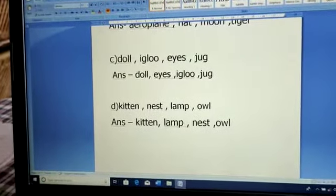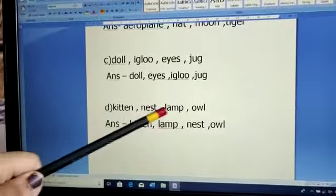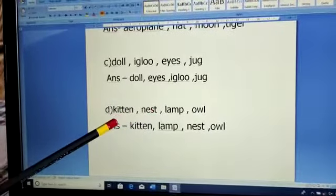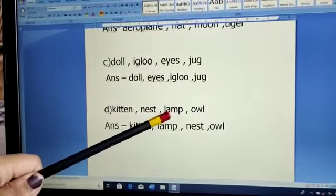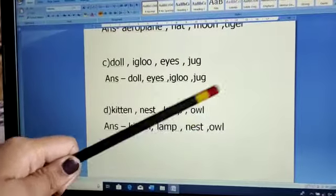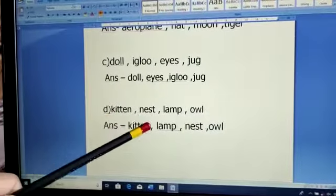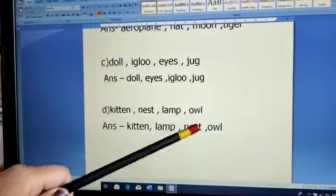Now last, D part was given to you that is kitten, K for kitten, N for nest, L for lamp and O for owl. Now see the first letter: K for kitten, N for nest, L for lamp and O for owl.